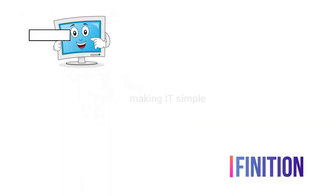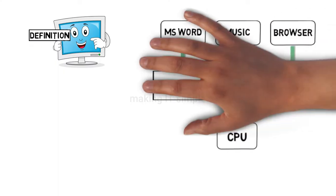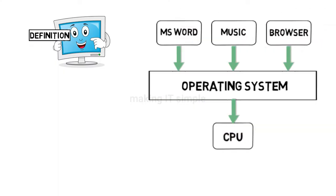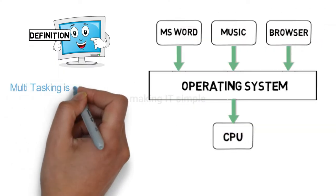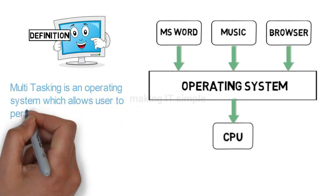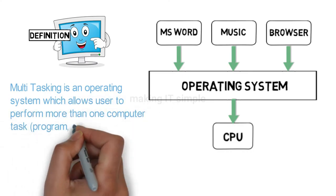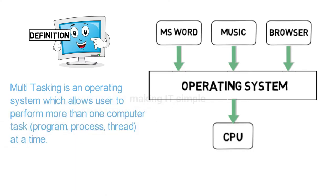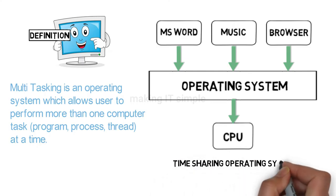Let's start with the definition. Multitasking is an operating system which allows the user to perform more than one computer task — that can be a program, or a process, or a thread — at a time. Multitasking is also called a time-sharing operating system.